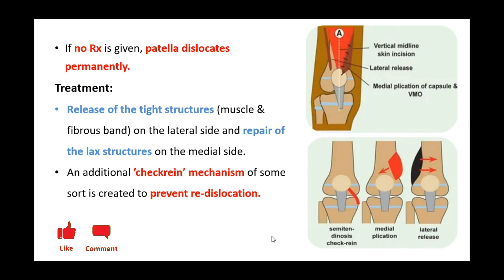If no treatment is given, the patella dislocates permanently. Treatment includes release of the tight structures on the lateral side and repair of the lax structures on the medial side. A vertical midline skin incision is made; lateral structures are released and medial capsular plication is performed — a surgical procedure that tightens the capsule around the joint. An additional checking mechanism using the semitendinosus tendon is created to prevent re-dislocation.